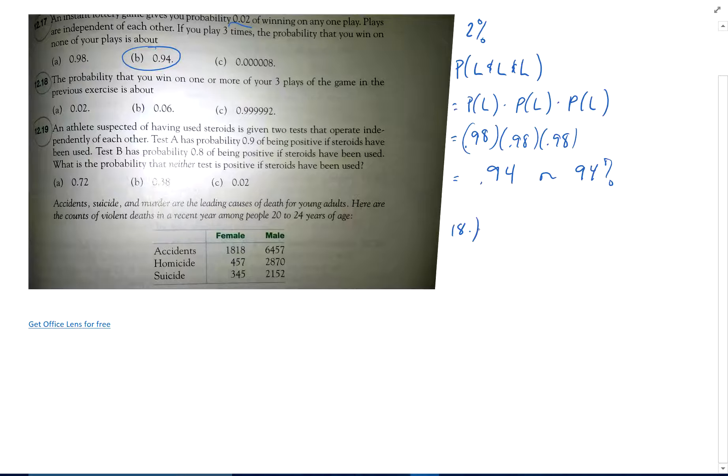Probability that you win on one or more of your three plays in the game. So probability that you win one or more. So that's a tough one because that's the probability that you win at least one. So that means you could win one or two or three. So there's a lot of different ways you could do that. It's easier to calculate the complement of winning at least one.